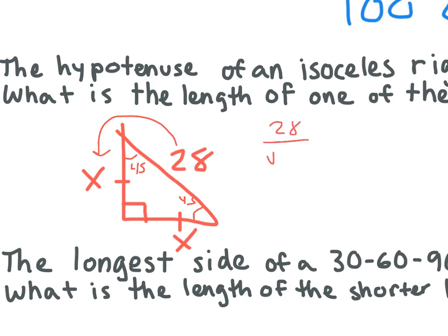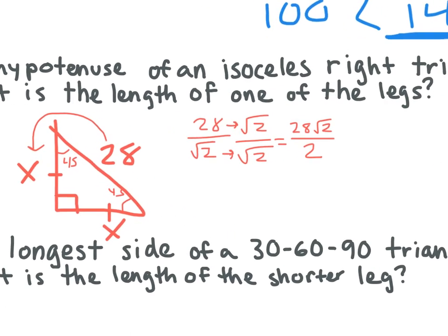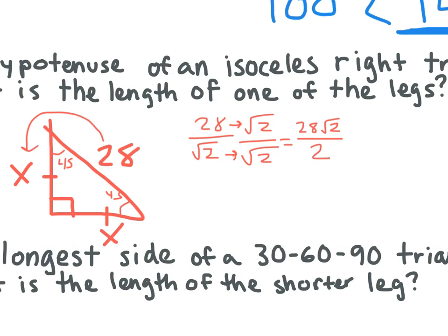So we have 28 divided by square root 2. Can we leave our answer like this? What do we need to do to simplify this? We multiply the top and bottom by square root 2. So we get 28 root 2 on the top. What's square root 2 times square root 2? Square root 4, which is just 2. Can we simplify more? Yes — 14 square root 2. It's an isosceles right triangle, so it's 45-45.